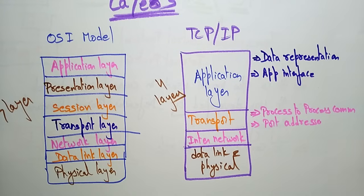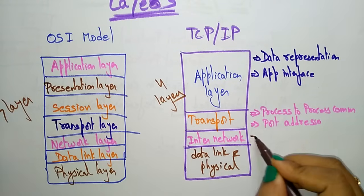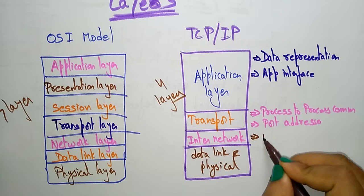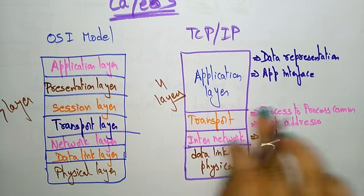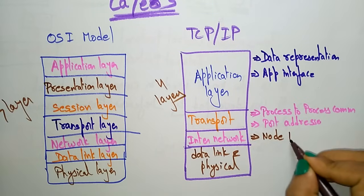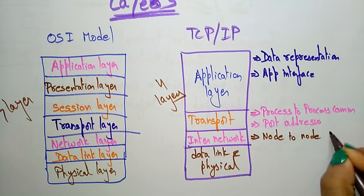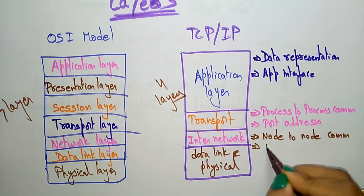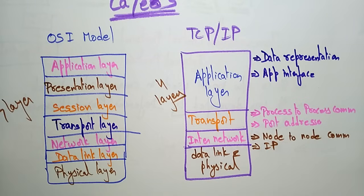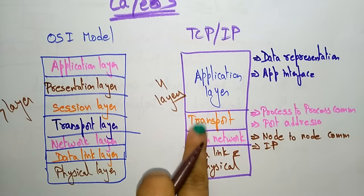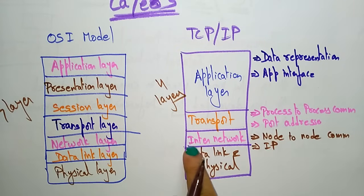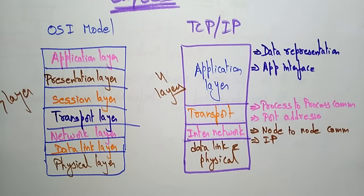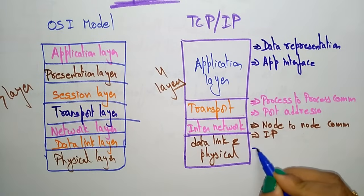The inter-network layer handles node-to-node communication, whereas the transport layer handles process-to-process communication. For node-to-node communication, the inter-network layer uses an IP address, while the transport layer uses a port address.